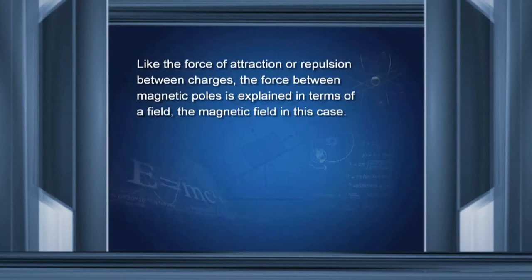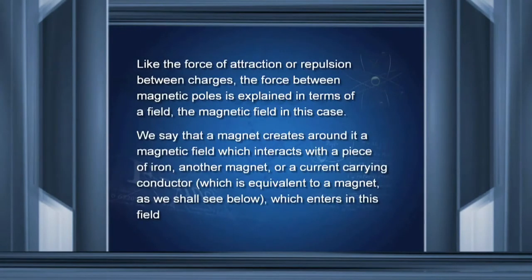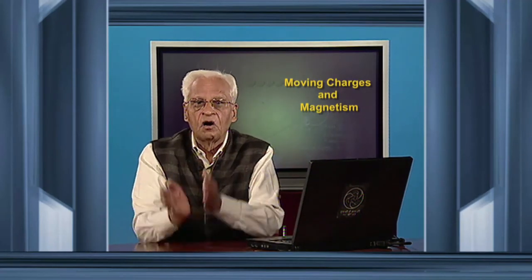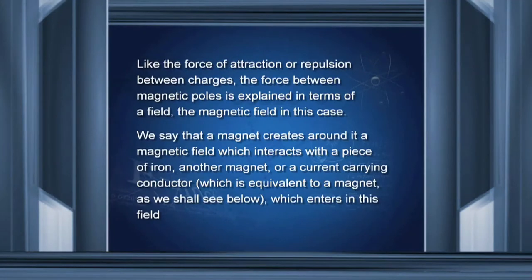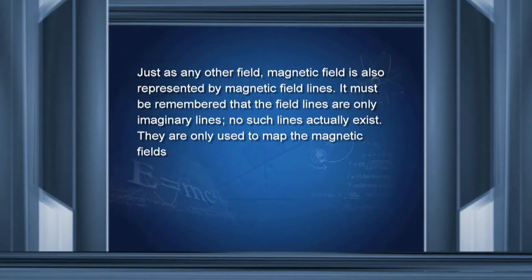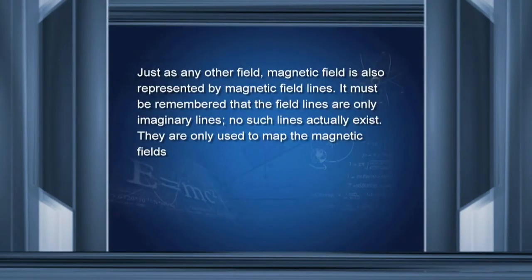Like the force between charges, the force between magnetic poles is explained in terms of a field — in this case, we call it a magnetic field. A magnet creates around itself a region of magnetic field in which, if another magnet or a current-carrying conductor enters, it will be affected by this field. Magnetic field lines are used to represent the field, but it must be remembered that they are only imaginary lines — no such lines actually exist. They are used simply to map a given magnetic field.